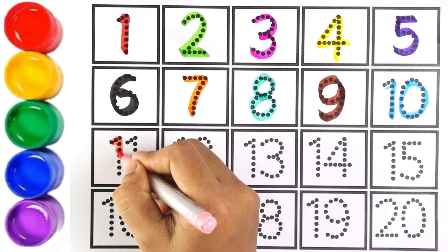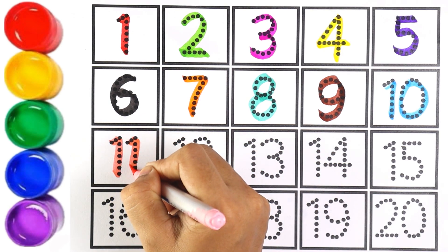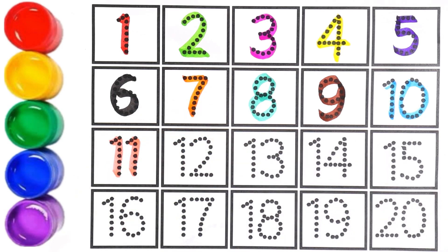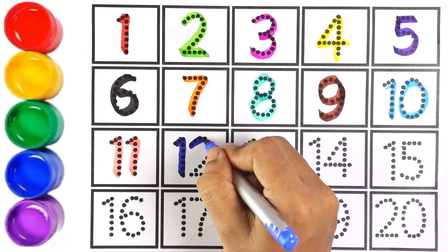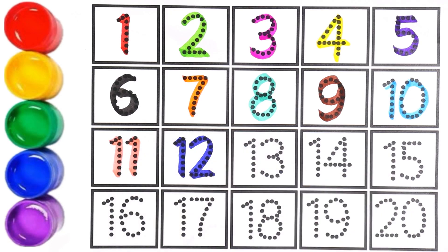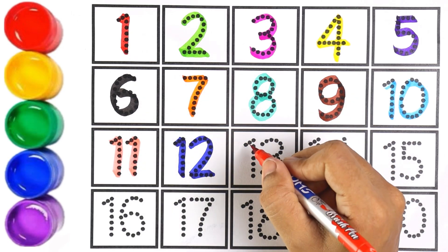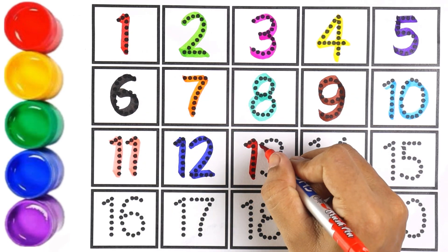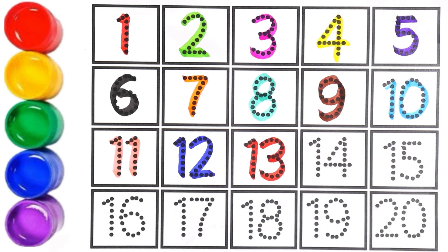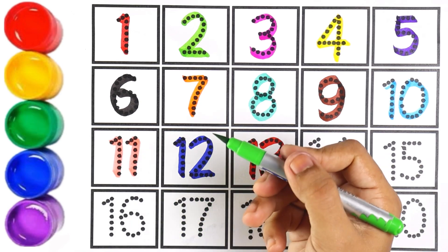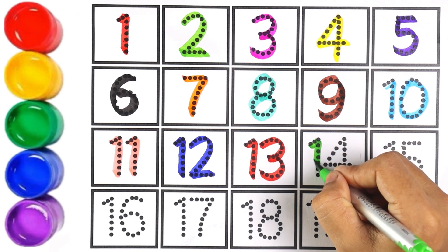Light pink color — number eleven. One and one makes the number eleven. Blue color — number twelve. One and two makes the number twelve. Red color — number thirteen. Light green color — number fourteen.